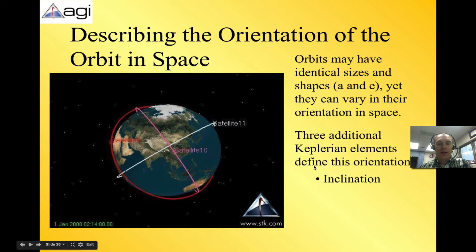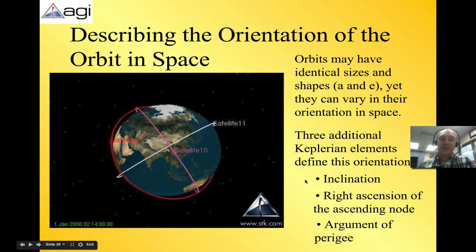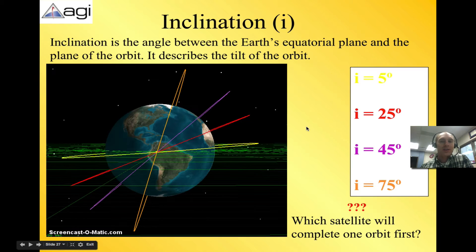And the three additional Keplerian elements define this orientation. So these are the three additional Keplerian elements: you have inclination, right ascension of the ascending node, and argument of perigee. And I'm going to go into detail on each one of these so you have an understanding of what they are. So let's start with inclination.